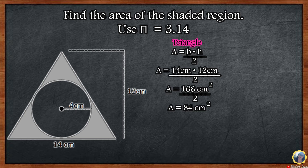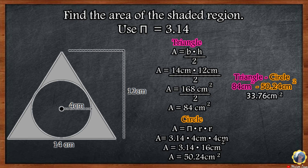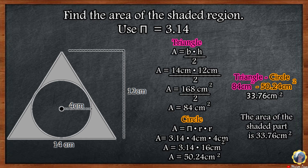Step 2: Find the area of the circle. The formula is pi times radius squared. 3.14 times 4 centimeters times 4 centimeters — 4 times 4 is 16 square centimeters times 3.14 — the area of the circle is 50.24 square centimeters. Step 3: Subtract the area of the circle from the area of the triangle to find the area of the shaded region. Since we only need the shaded part, we subtract the two areas. 84 square centimeters minus 50.24 square centimeters equals 33.76 square centimeters. The area of the shaded part is 33.76 square centimeters.